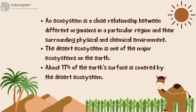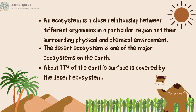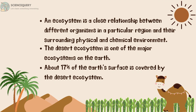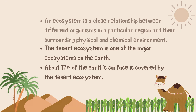An ecosystem is a close relationship between different organisms in a particular region and their surrounding physical and chemical environment. The desert ecosystem is one of the major ecosystems on the earth. About 17% of the earth's surface is covered by the desert ecosystem.